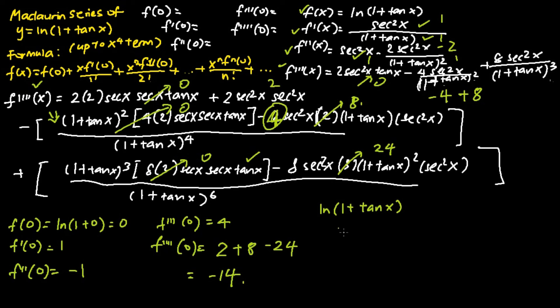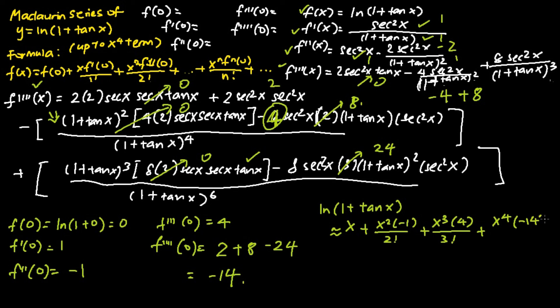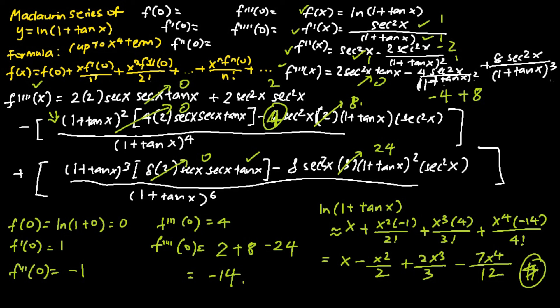ln(1 plus tangent x) is approximately equal to: f(0) is 0, plus x times 1 over 1 factorial, which is x. f''(0) is negative 1, so we have negative x squared over 2 factorial. The x cubed term is 4x cubed over 3 factorial. The x to the power of 4 term is negative 14 x to the power of 4 over 4 factorial. This simplifies to x minus x squared over 2 plus 2x cubed over 3 minus 7x to the power of 4 over 12, which is the final answer.